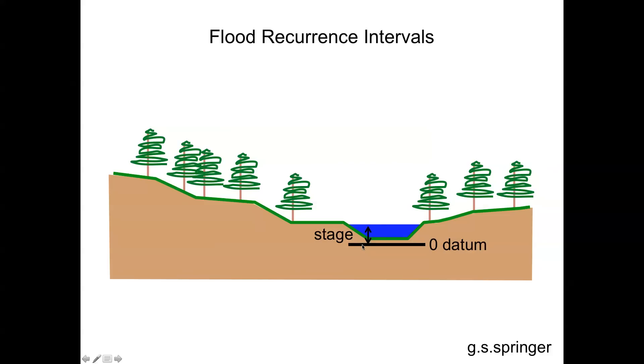So we're going to look at flood recurrence intervals as a function of stage, and one of the questions that we might ask is, what is the stage of the 100-year recurrence interval flood? And this is a flood that we would expect on average to see about once every 100 years. It has a 1% chance of occurring in any given year as well.